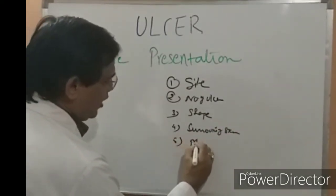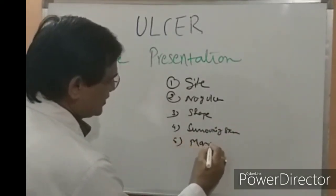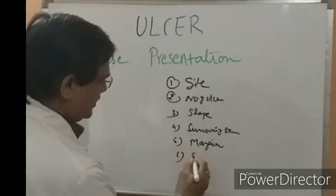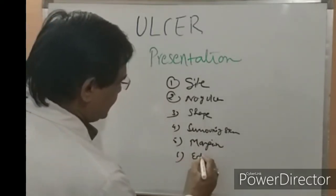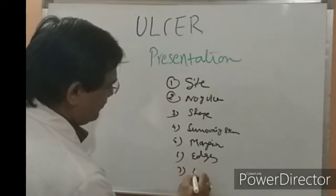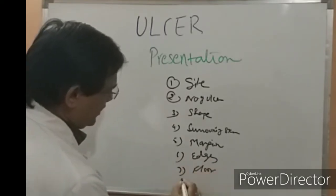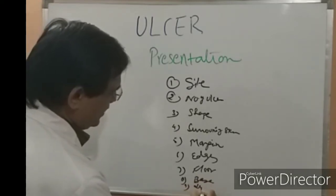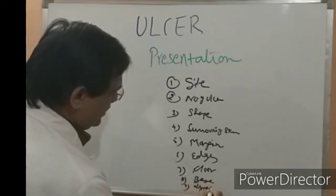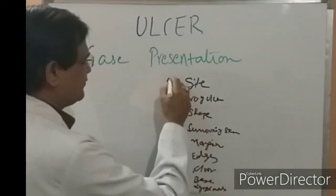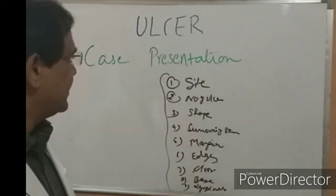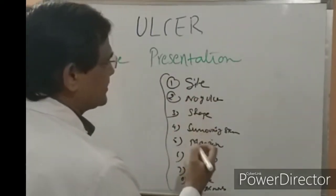Then you describe the surrounding skin, then the margin and the edge of the ulcer, then the floor, then the base, and finally the lymph nodes. These are the key elements to describe while presenting an ulcer case.